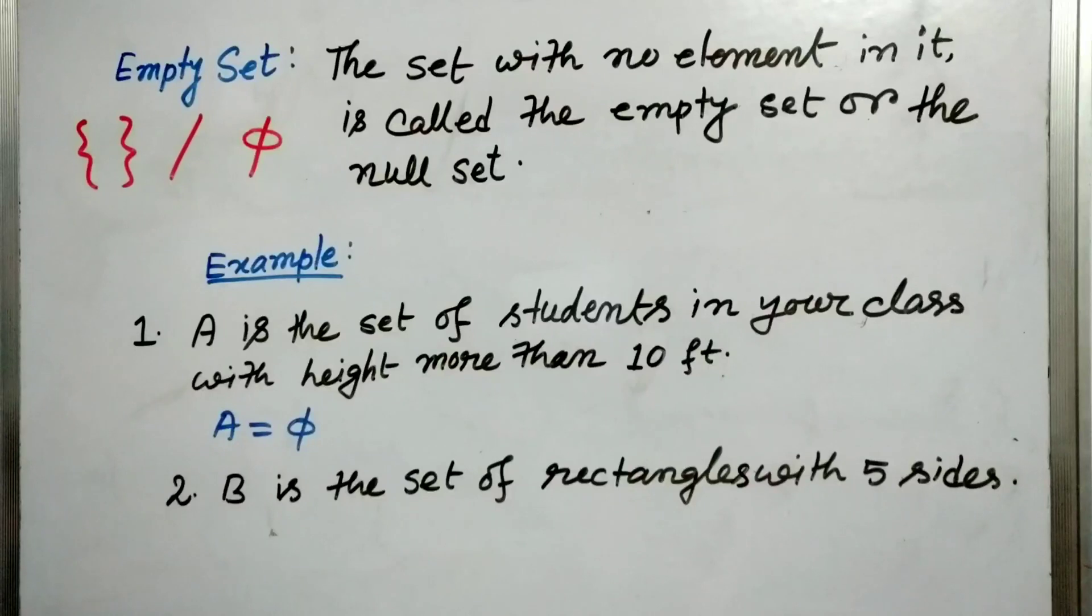So let us take another example. B is the set of rectangles with five sides. So you can never find a rectangle with five sides. So therefore there is no element in B and so B is empty set and it is denoted as φ.